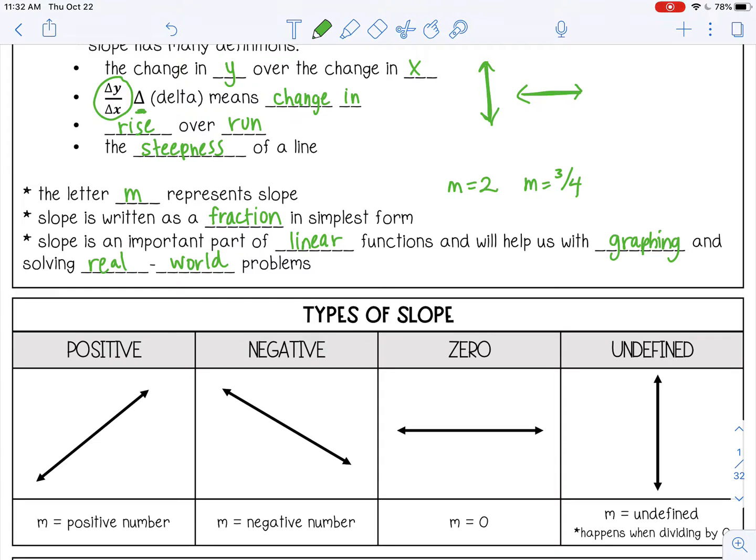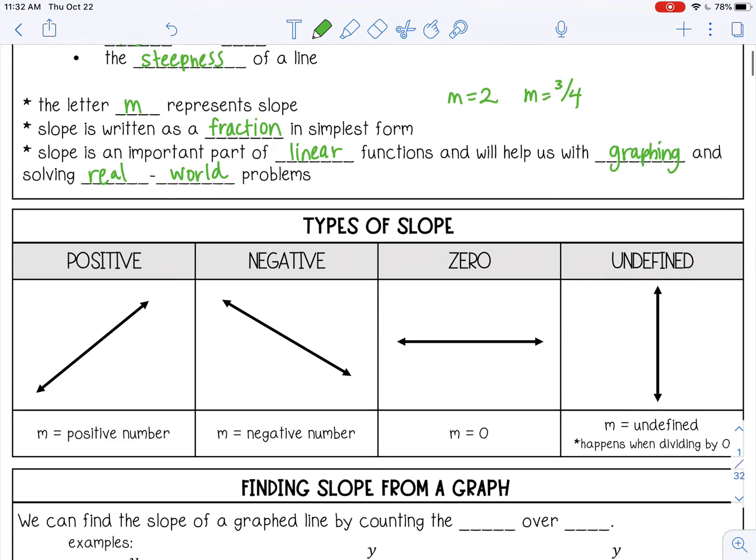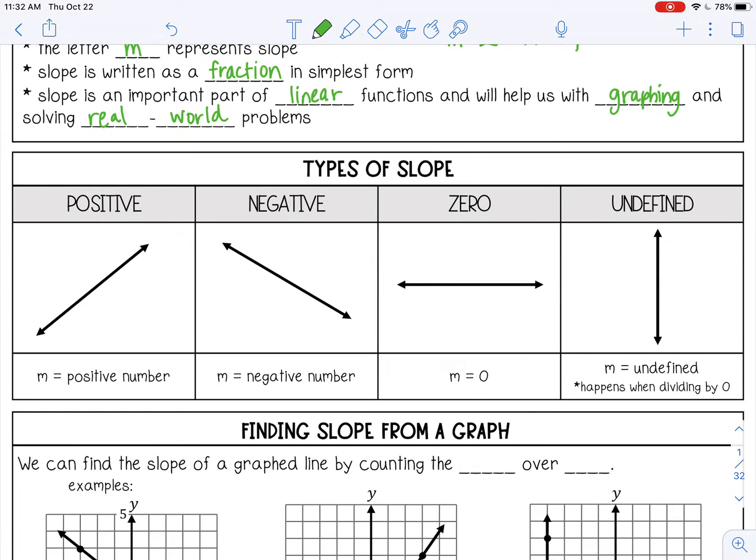So let's talk about the types of slope. There are four different types of slope. Positive slope means the line rises from left to right, and that's when m is a positive number, like m equals positive 5 or positive 1 half.